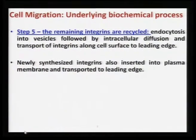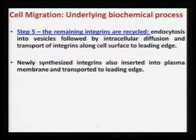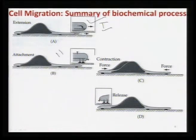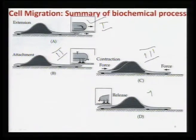Step 5: the remaining integrins are recycled — endocytosis into vesicles followed by intracellular diffusion takes place, and newly synthesized integrins are also inserted into the plasma membrane and transported to the leading edge. To summarize the biochemical processes: stage 1 is extension, stage 2 is focal contact establishment, stage 3 is contraction forces, and stage 4 is release.